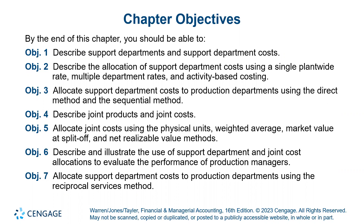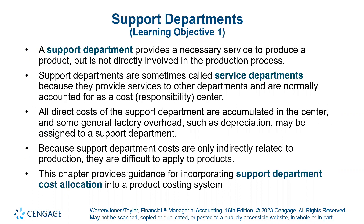Today we're looking at the first three learning objectives. We need to understand what a support department is: they provide a service that helps make the product, but aren't actually involved in the production process. You might hear them called service departments, and they include things like maintenance and human resources. All of those direct costs are accumulated in the cost center and then allocated from the support departments onto the product, because they are related to production. To understand the true cost of producing the product, we need to make sure those support department costs are included.